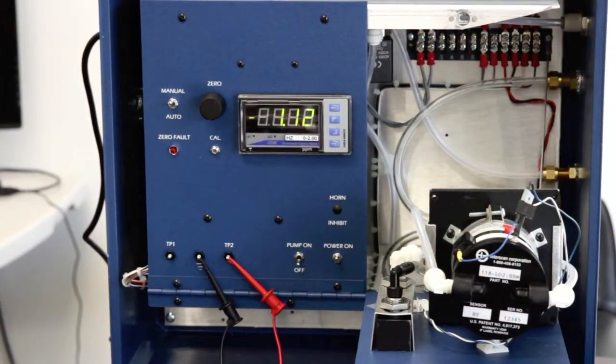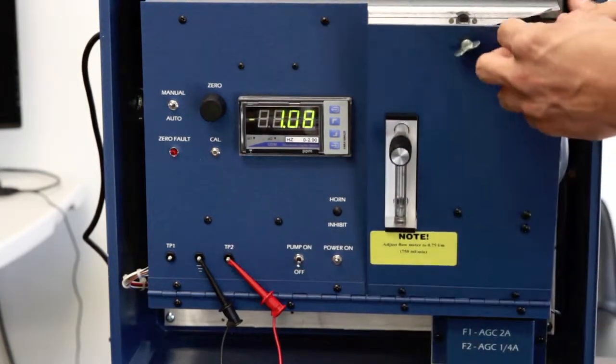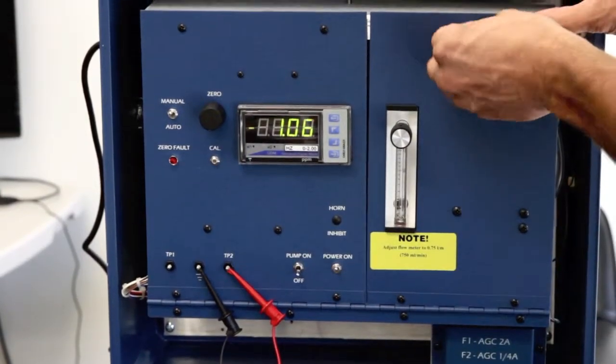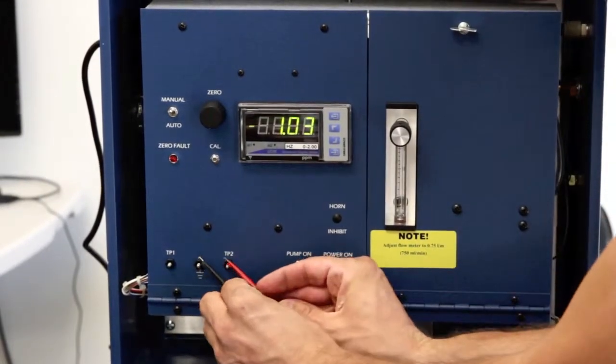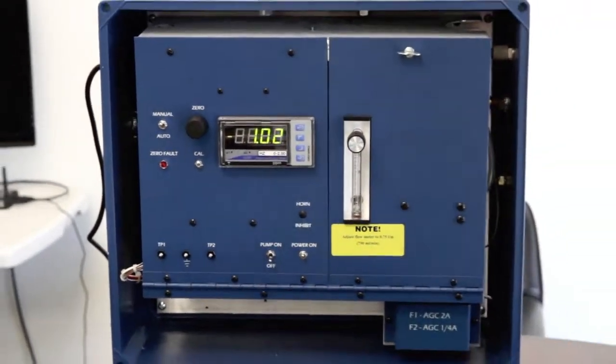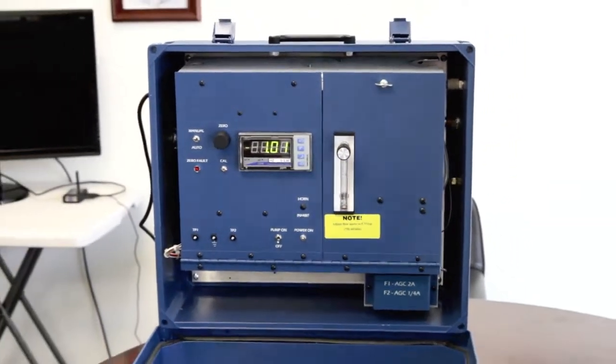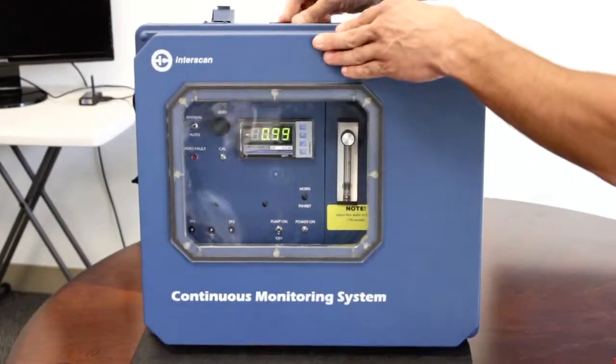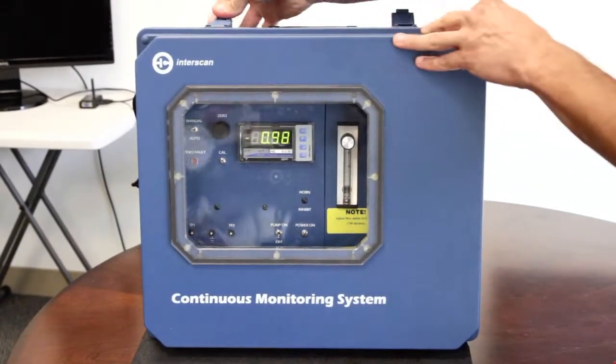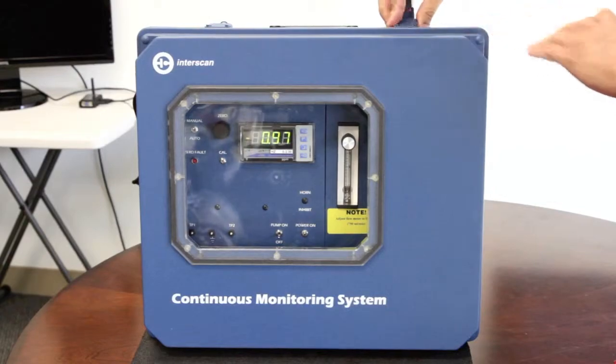The ECS calibration is now complete. However, your analyzer is not ready for use. Please allow 24 hours for the sensor to stabilize. Afterwards, you can begin the zero procedure as documented in your instruction manual and your instrument is ready for use. Thank you.